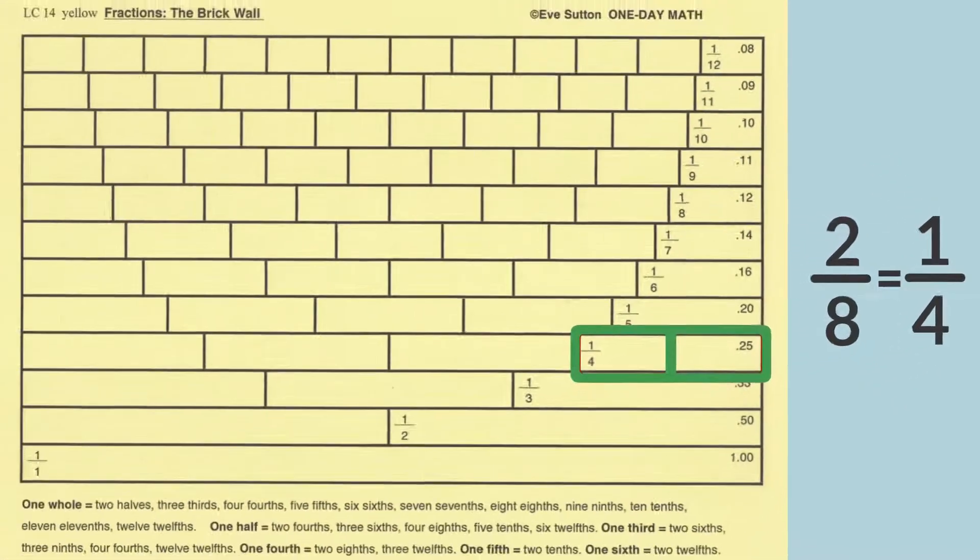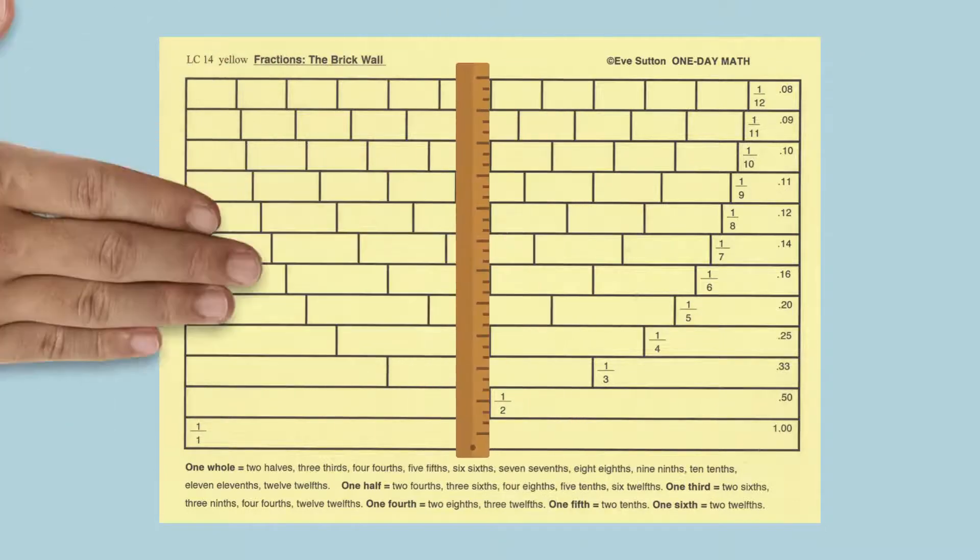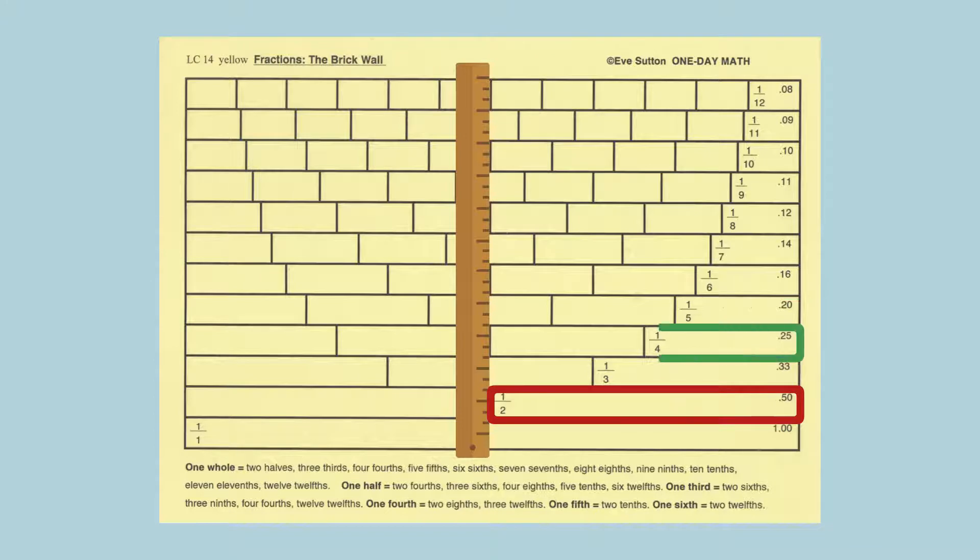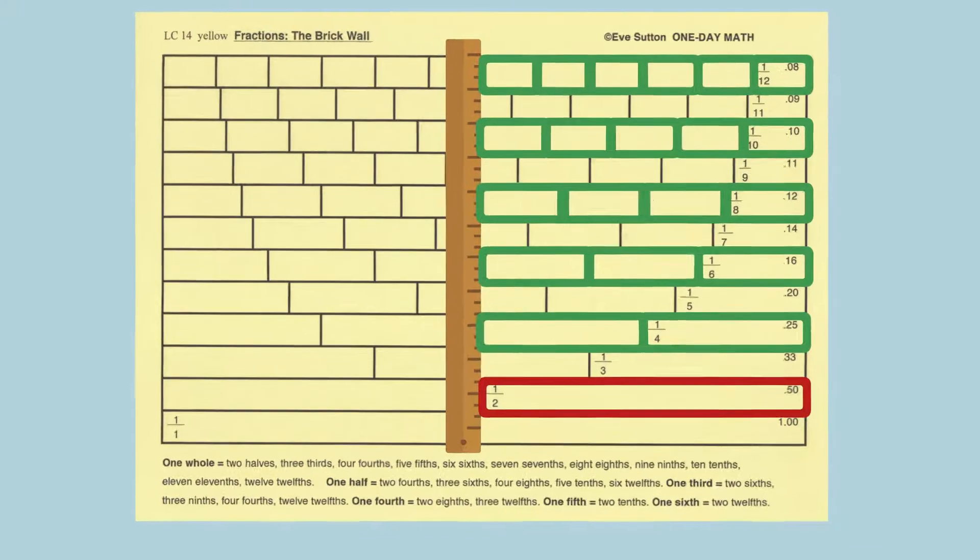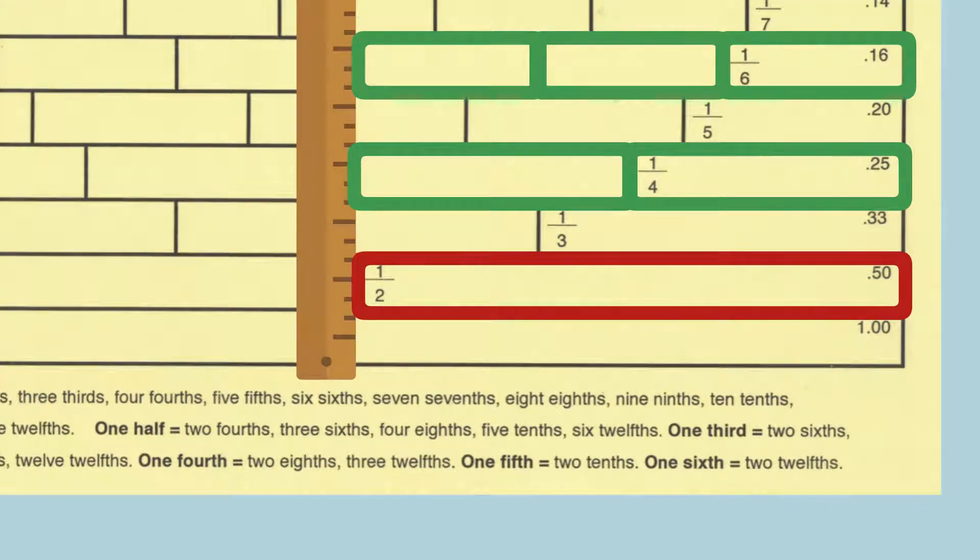Try another example. Put your ruler across the middle of the brick wall, dividing the right half from the left half. How many smaller bricks are exactly equal to one-half? The answer is at the bottom of the card. You can read the answer along with me.